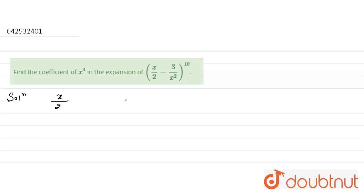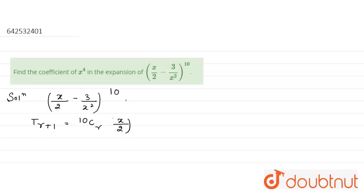We have the given expression (x/2)^10. So let's find its rth term. The formula for the rth term is: T(r+1) = 10Cr · (x/2)^(10−r) · (−3x²)^r. This is the formula for the (r+1)th term.